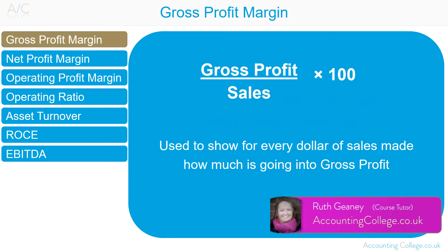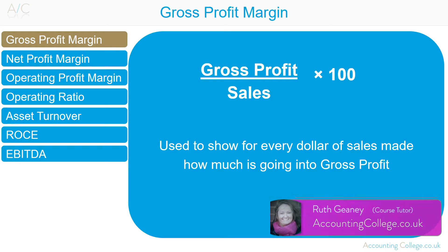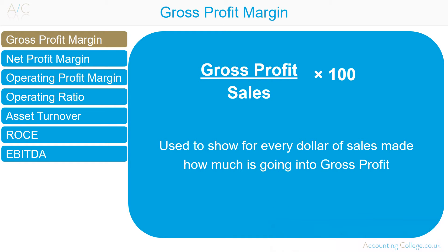Gross profit margin is gross profit divided by sales. Gross profit is sales less cost of sales. Gross profit margin is used to show for every dollar of sales made by an organisation, how much is going into gross profit. For example, gross profit is $5,000 and sales are $10,000. That means for every dollar of sales made, 50 cents is gross profit.